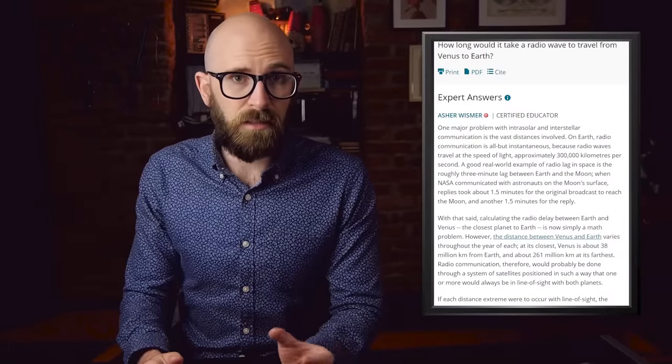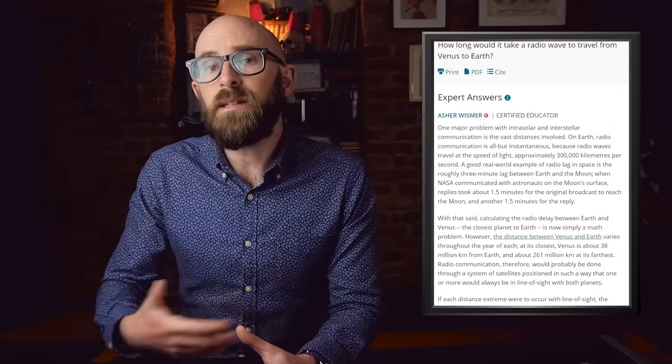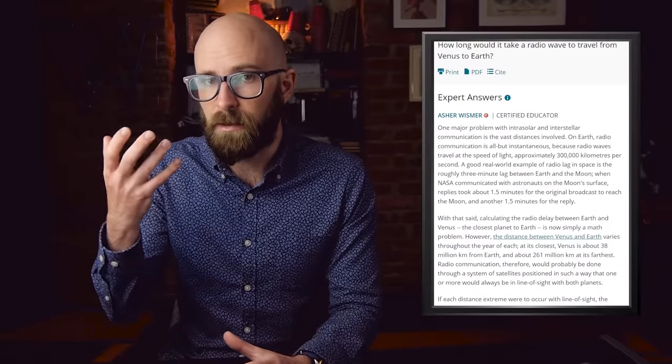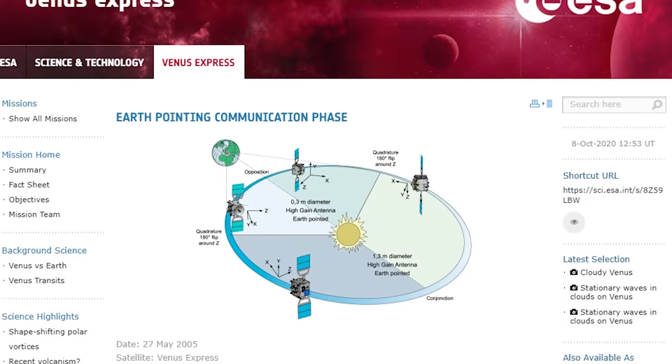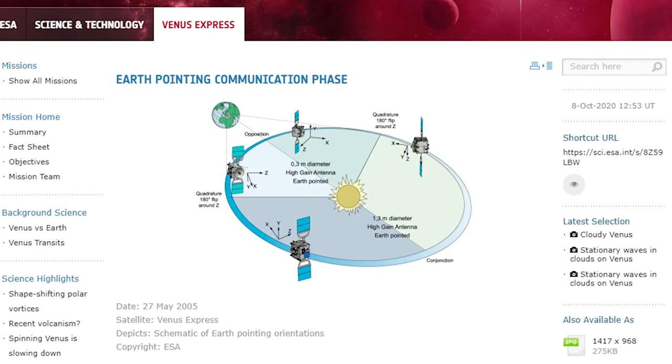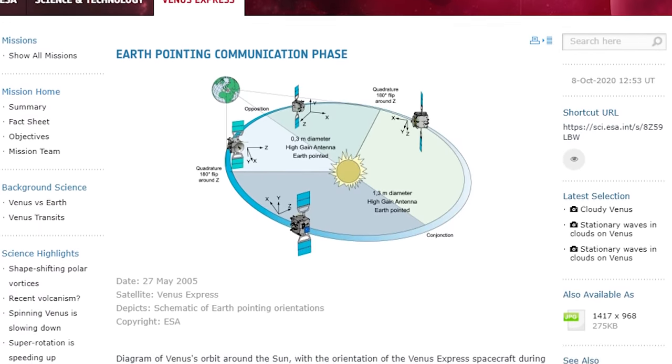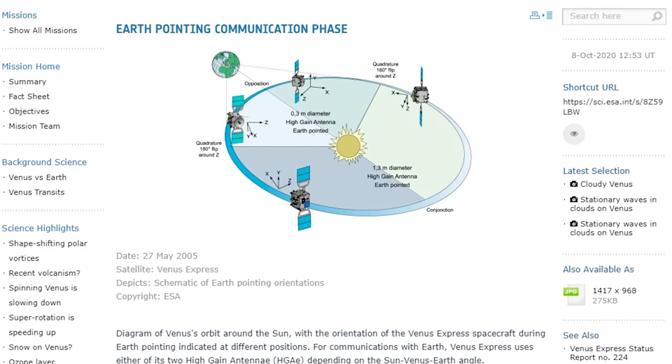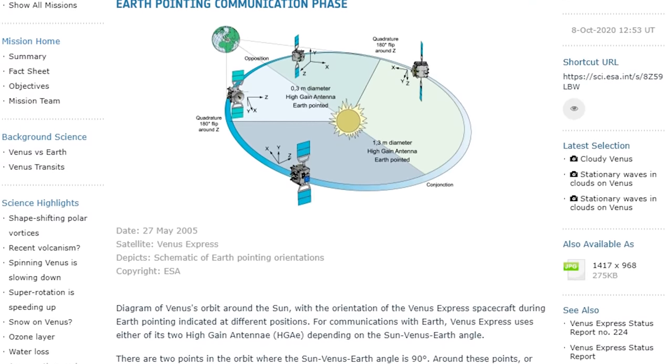4. Communication. Venus being the closest planet to Earth means that communication times would be significantly better than they would be on Mars. When Venus is closest to the Earth, transmissions to and from it would only take between 2 and 5 minutes. And if Venus were a little further out, it would still only take about 8 minutes to receive a message.